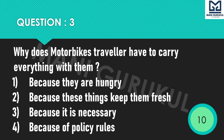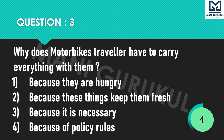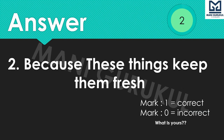Question 3: Why does a motorbike traveller have to carry everything with them? Options: 1st Because they are hungry, 2nd Because these things keep them fresh, 3rd Because it is necessary, 4th Because of policy rules. Your time starts now. Answer is 2nd: Because these things keep them fresh.